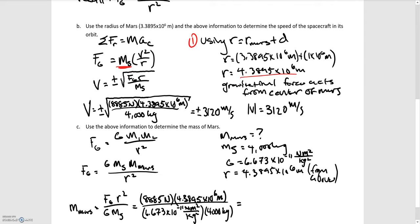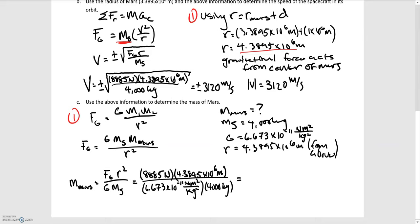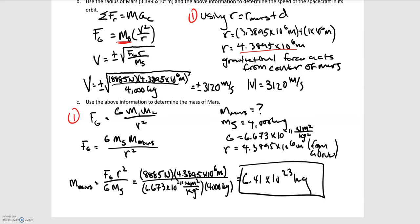For Part C, we're asked to determine the mass of Mars. We use the gravitational force equation since we now have all the required information. Substituting all our numbers in, the mass of Mars is the only unknown variable. Solving, we find the mass of Mars is equal to 6.41 times 10 to the 23rd kilograms. This seems reasonable because the mass of Earth is approximately 5 times 10 to the 24th kilograms, so we're in the right ballpark.